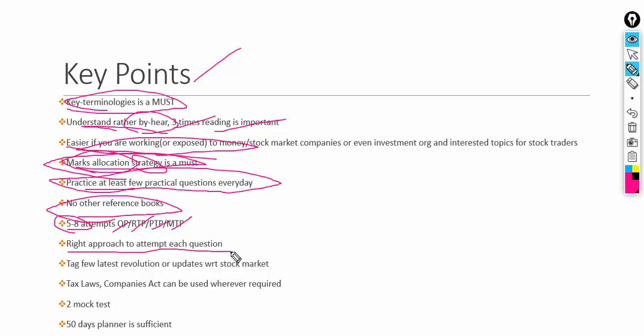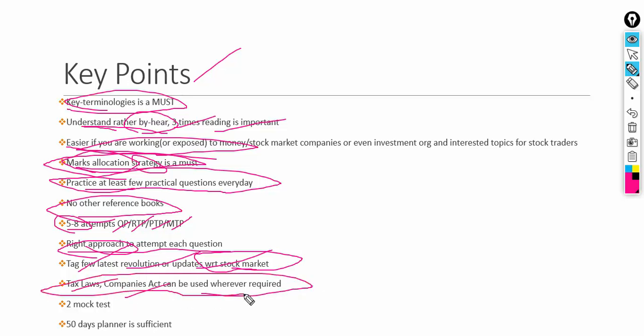The right approach is very important — do not jump to conclusions. Read the question carefully, then attempt it to get good marks. Try to include latest updates related to the stock market; for example, Zerodha, the discount broker that has attracted many young investors. You can also link Companies Act and tax clauses in your answers wherever relevant, but ensure it is relevant — do not write just for the sake of writing. A 50-day planner is very sufficient to plan and get very good marks in this subject.